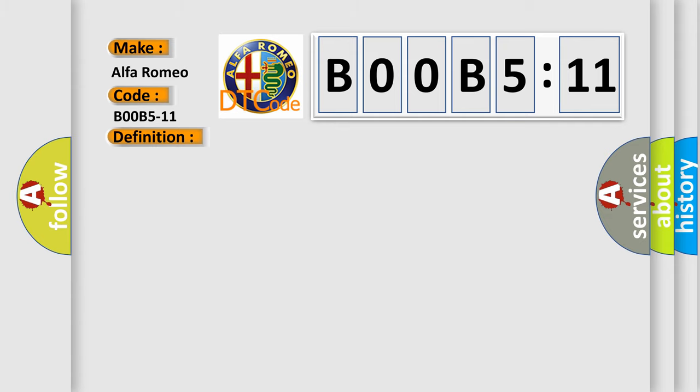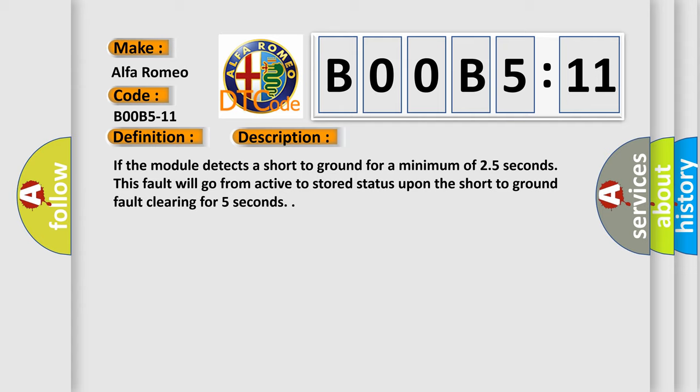Now this is a short description of this DTC code. If the module detects a short to ground for a minimum of 2.5 seconds, this fault will go from active to stored status upon the short to ground fault clearing for 5 seconds.